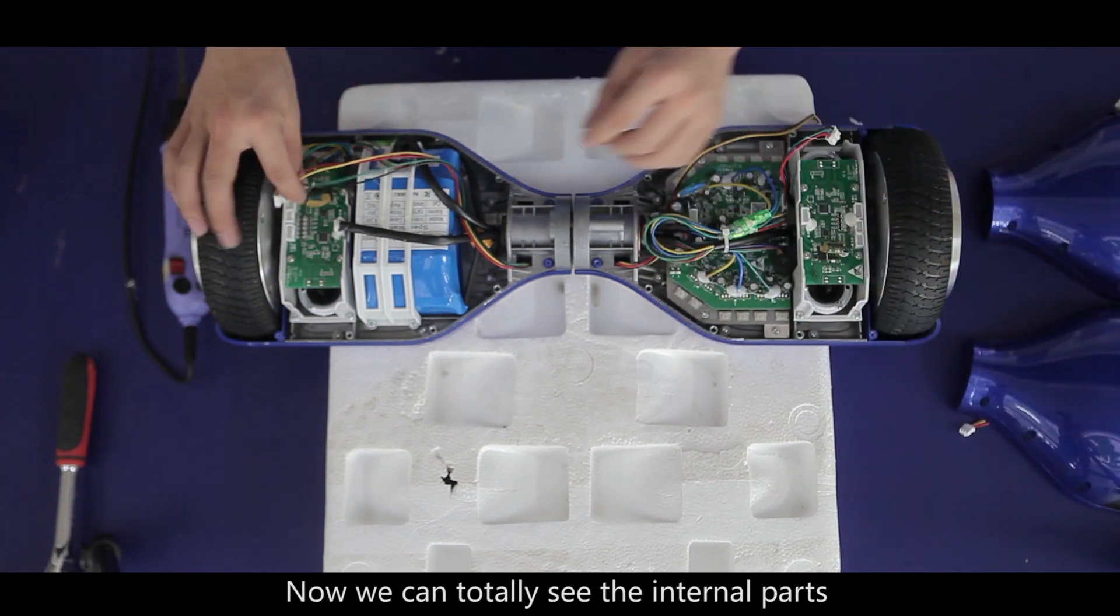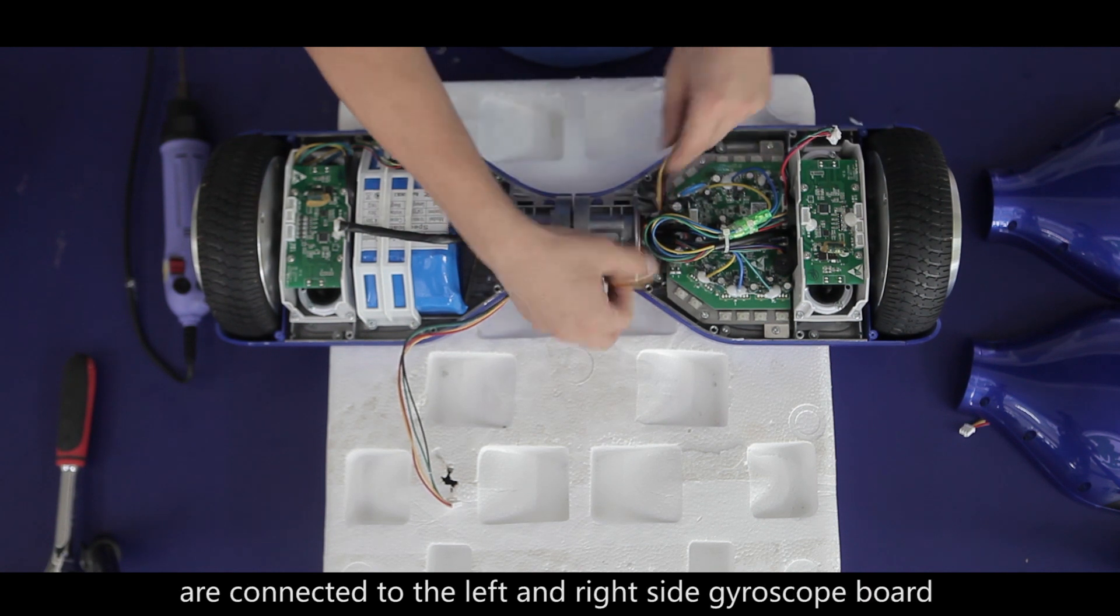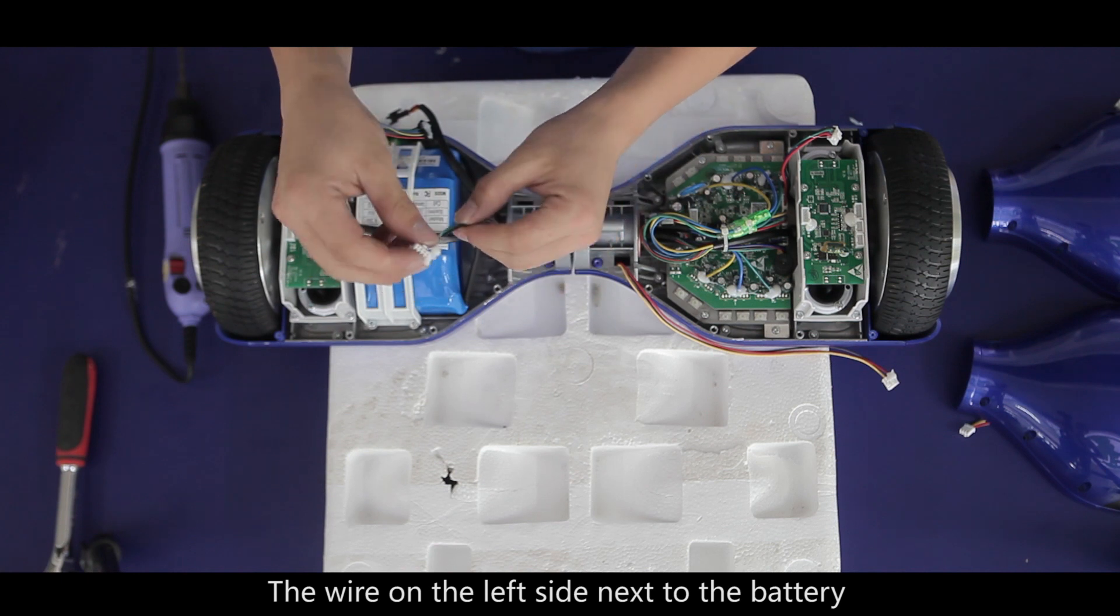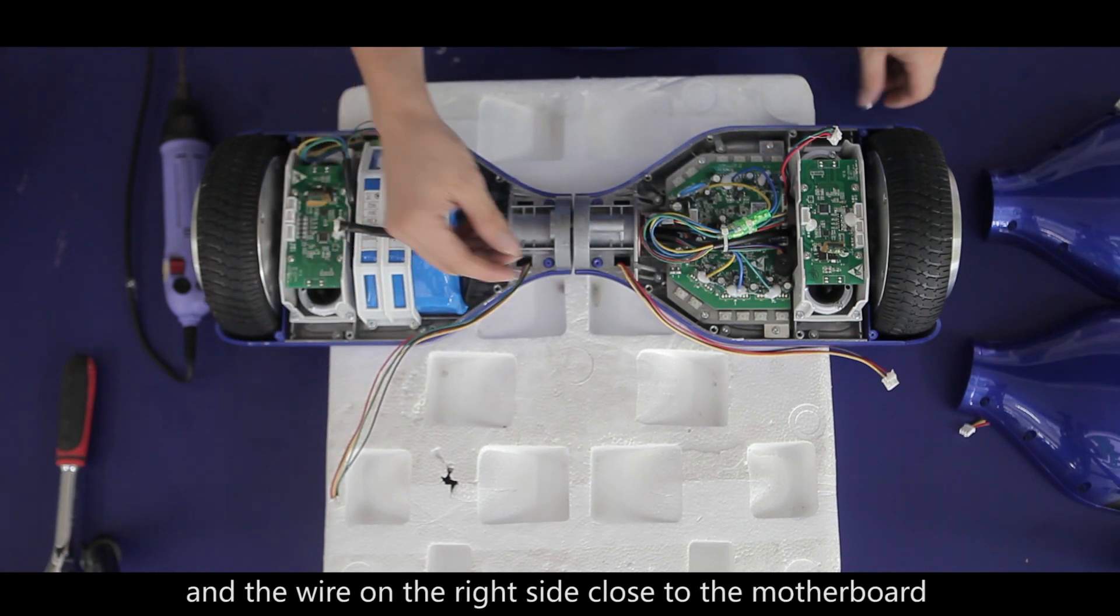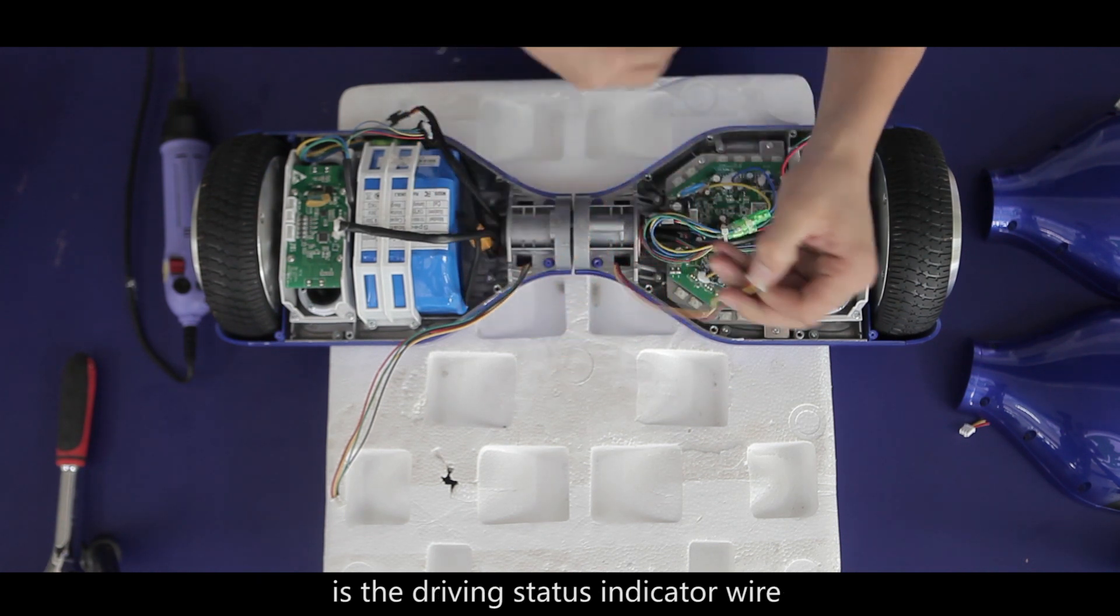Now we can totally see the internal parts, and the two wires I have in my hands are connected to the left and right side gyroscope board. The wire on the left side next to the battery is the battery indicator wire, and the wire on the right side close to the motherboard is the driving status indicator wire.